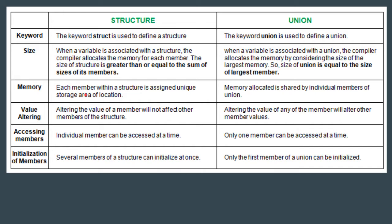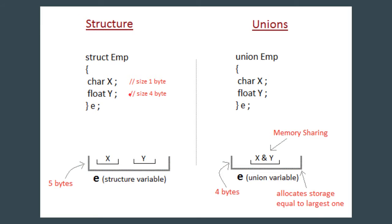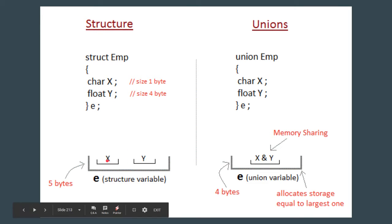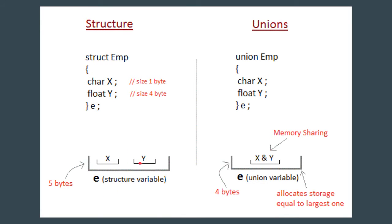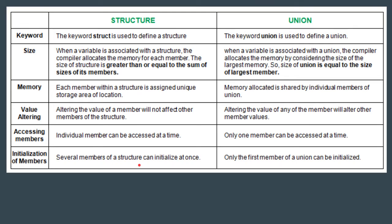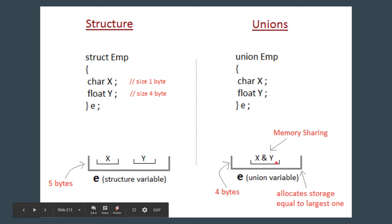In structures, each member is assigned a unique storage location. Both x and y are allocated different spaces in memory. But in case of a union, both are stored in the same memory space.